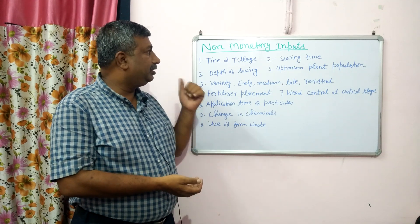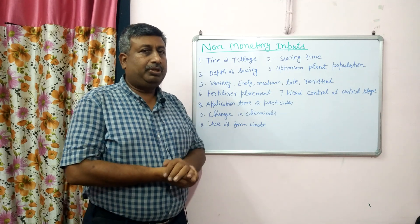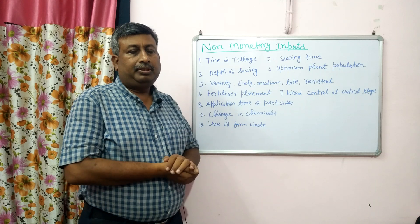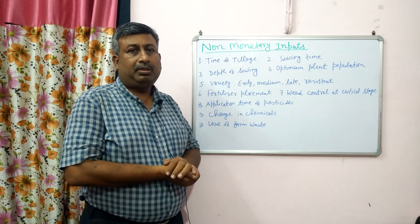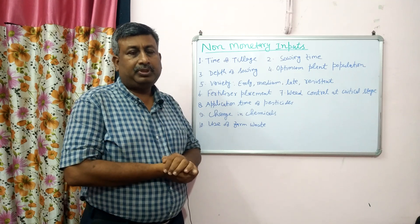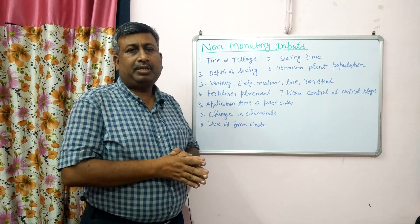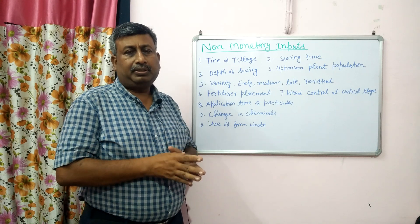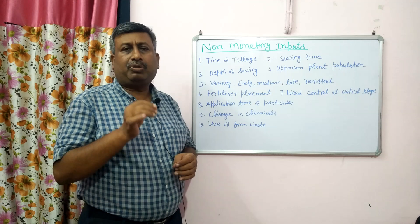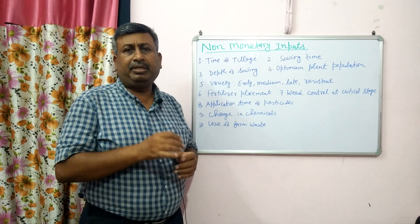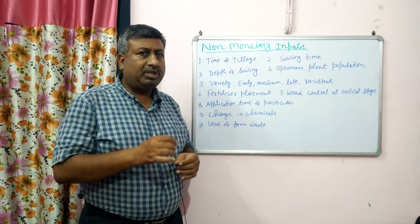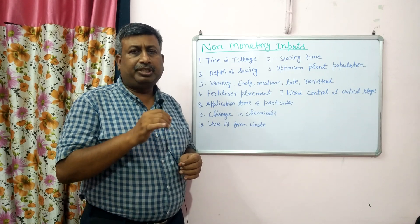This lecture is related to non-monetary inputs. Non-monetary inputs are those inputs on which money is not spent. Many inputs require money — for example, fertilizer requires money, tillage operations require money. So cost is involved, and as inputs increase, cost of cultivation increases, and as cost of cultivation increases, profit reduces.